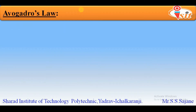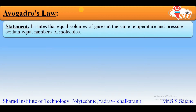Avogadro's Law is the last law from the concept of gas laws. It is an experimental gas law relating the volume of a given gas to the amount of substance of the gas present, and it is a specific case of the ideal gas law. This law is named after the scientist Amedeo Avogadro, who stated in 1812 that two given samples of an ideal gas of the same volume at the same temperature and pressure will contain the same number of molecules. The statement is: equal volumes of gases at the same temperature and pressure will contain equal number of molecules.